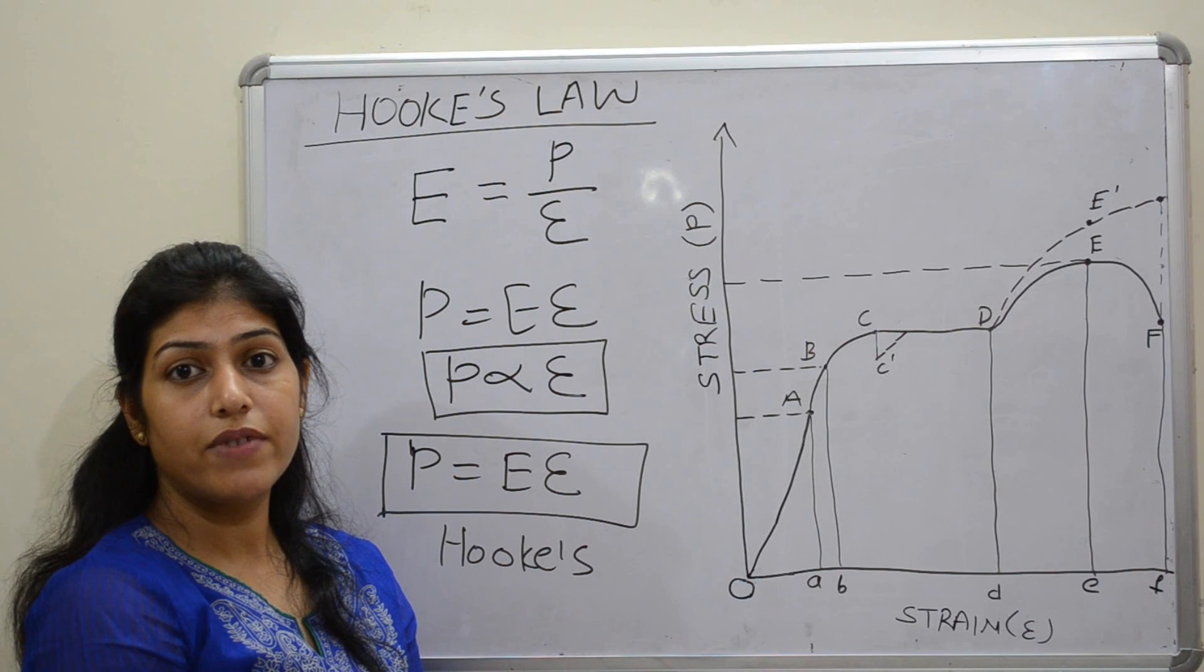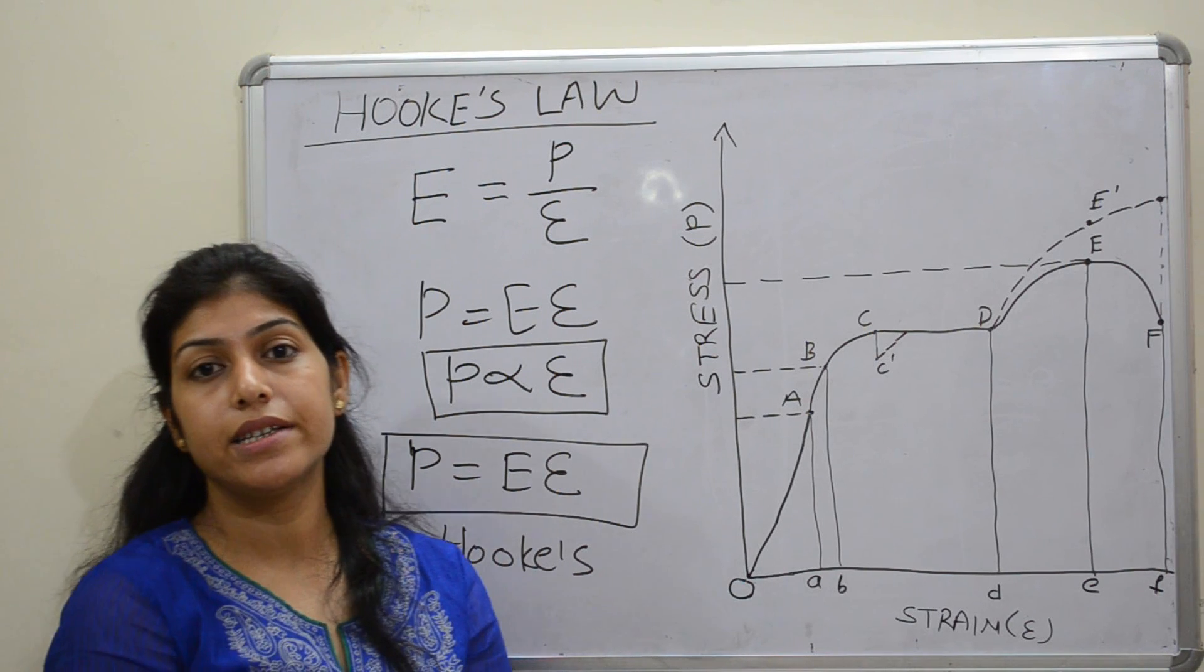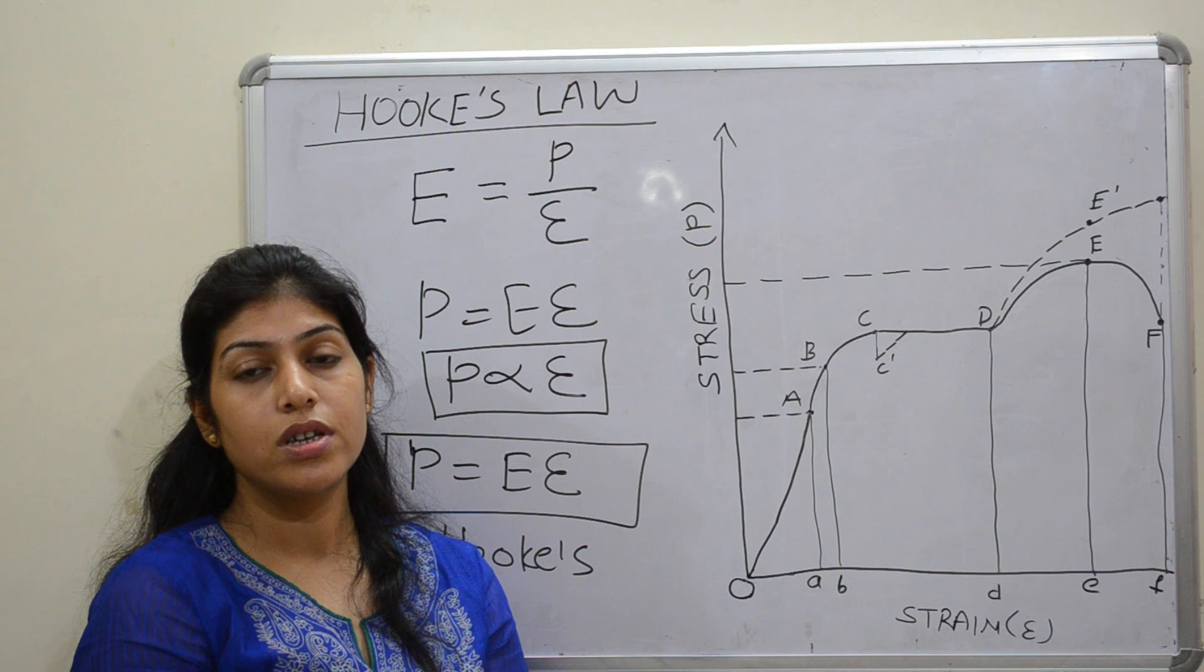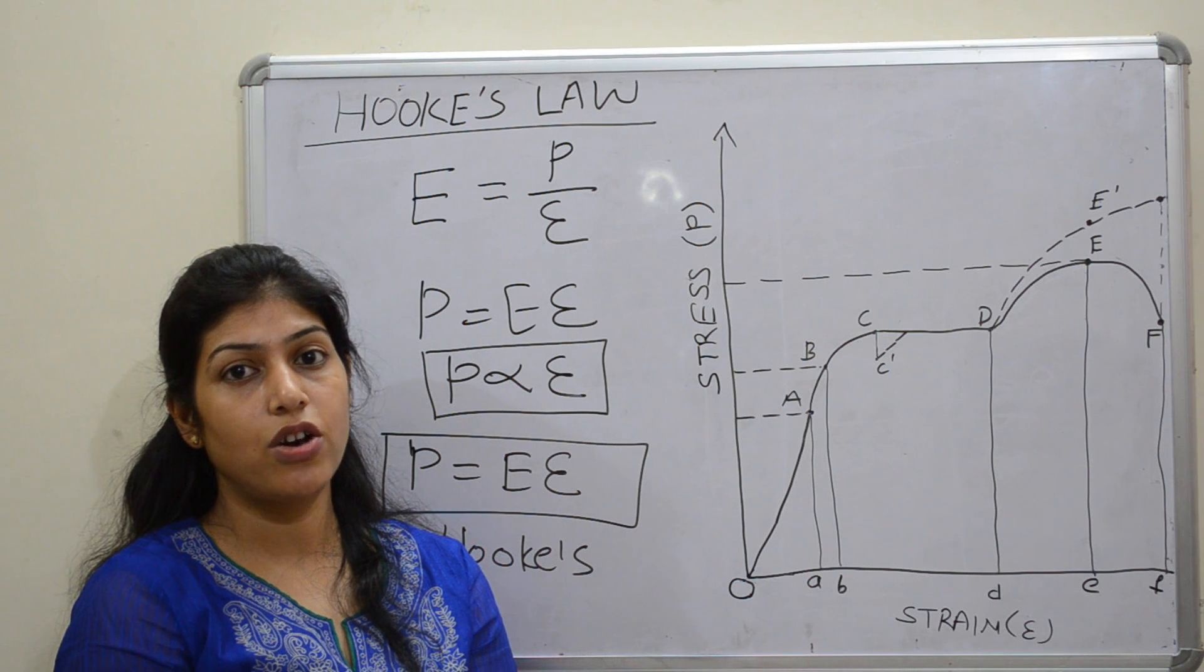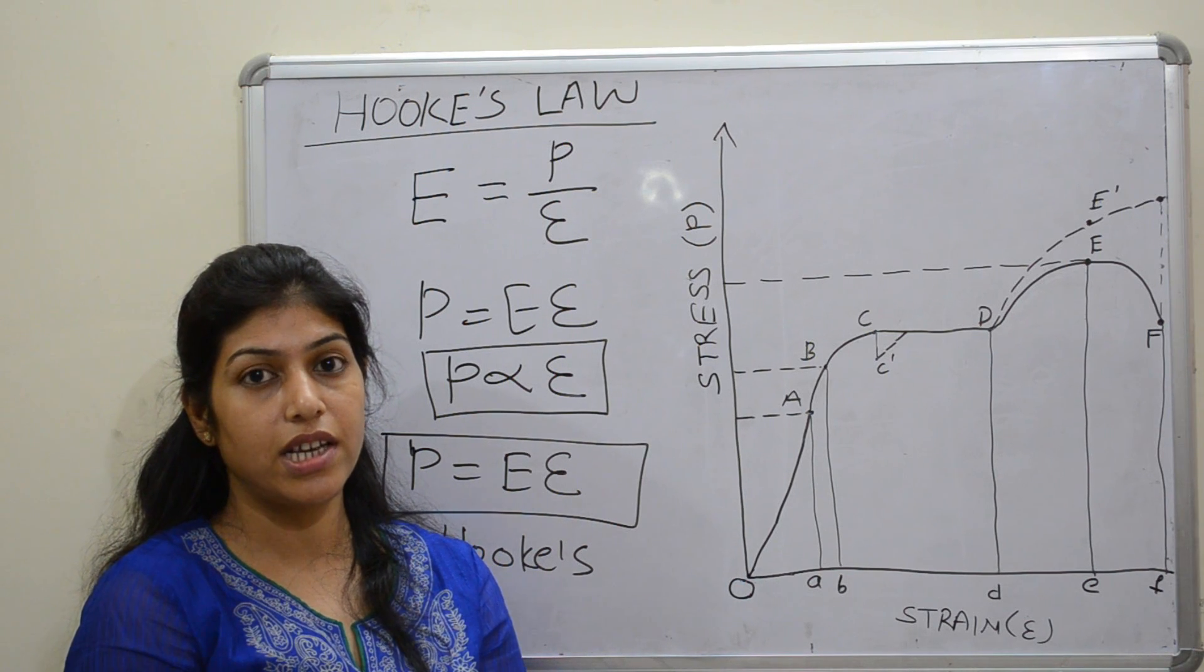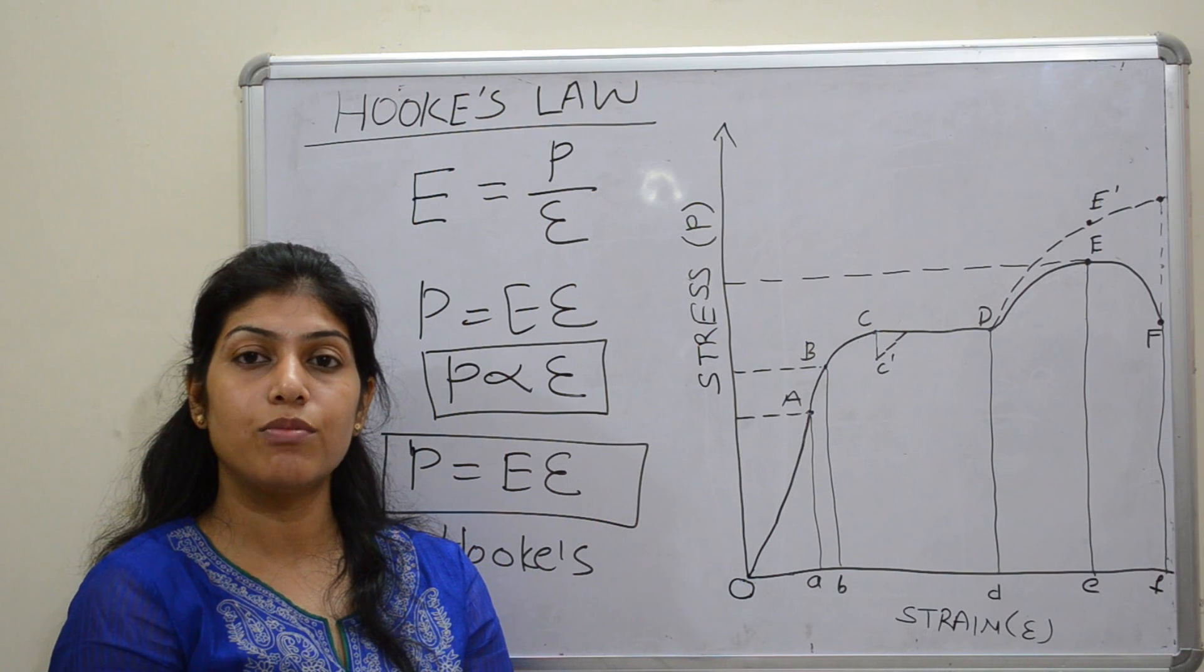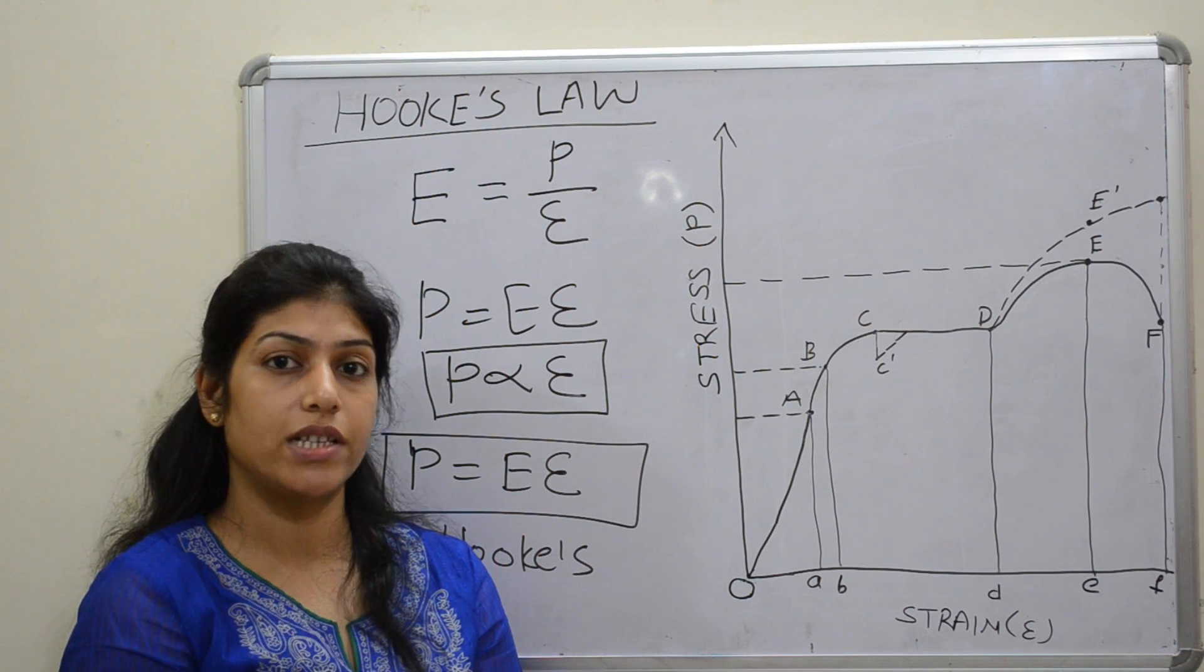In 1807, scientist Thomas Young introduced constant of proportionality or Young's modulus of elasticity, which later came to be known as Young's modulus of elasticity.